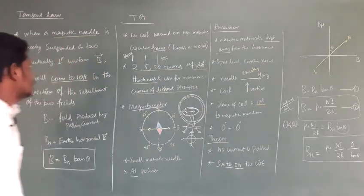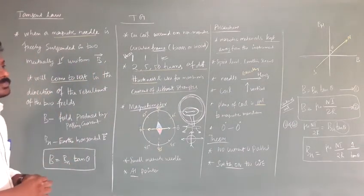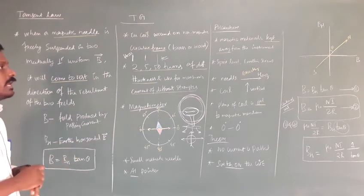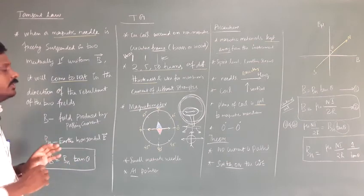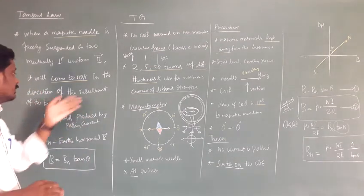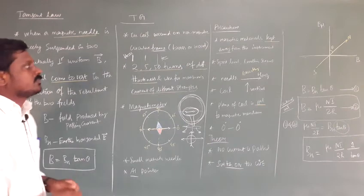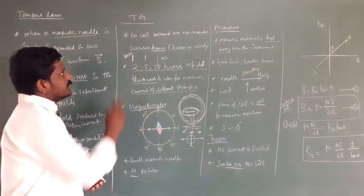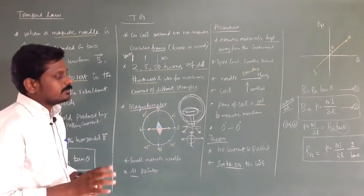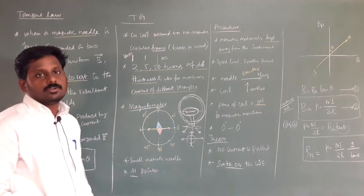In summary, we have discussed tangent law and the tangent galvanometer. Tangent law states that a magnetic needle placed in a horizontal magnetic field and a field due to a current carrying conductor comes to rest in the direction of the resultant of the two fields, giving B equals BH tan theta. From this principle, the tangent galvanometer works, and using it we find the horizontal magnetic field BH equals mu-zero N i by 2R multiplied by 1 over tan theta.